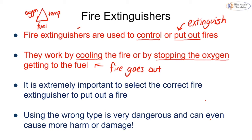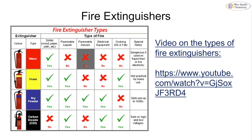It's very important to use the correct fire extinguisher — they are not all the same, and using the wrong type can put you in more danger. You usually need to be trained in fire safety to know which to use. There are four different types: water (red), foam (yellow), dry powder (blue), and carbon dioxide (black). A link to more information on fire extinguishers will be in the description below.